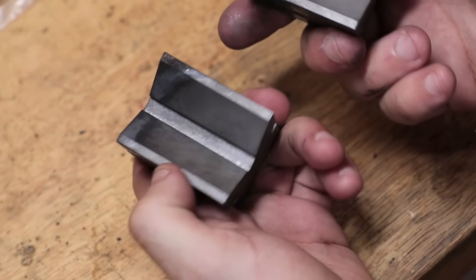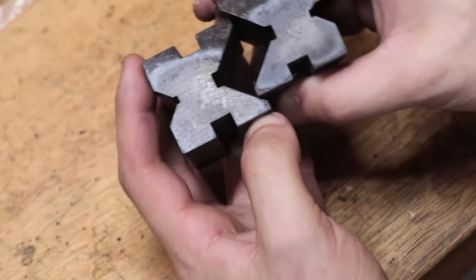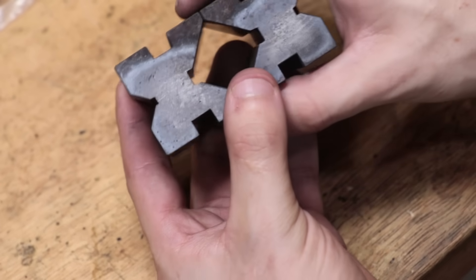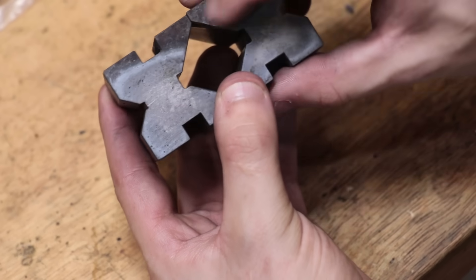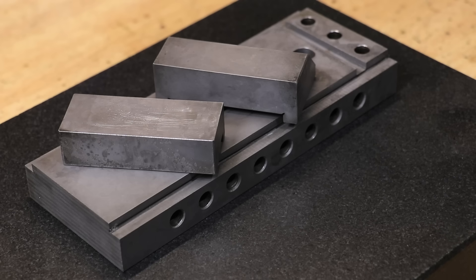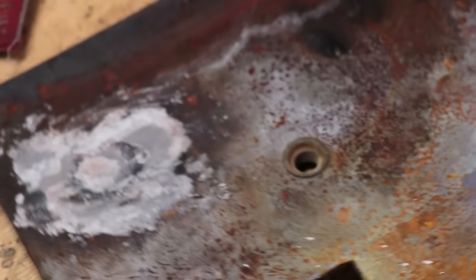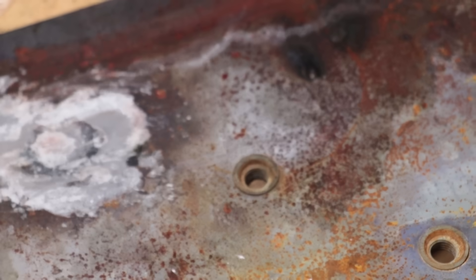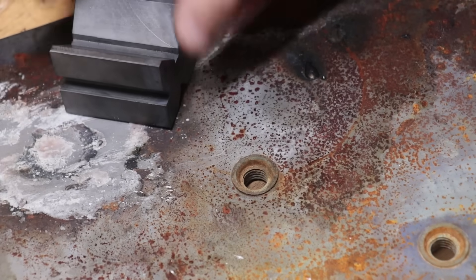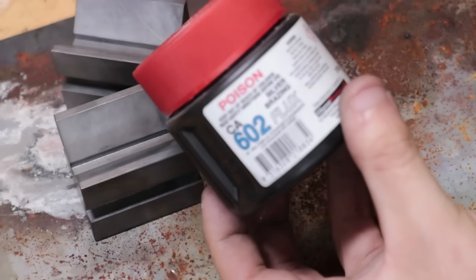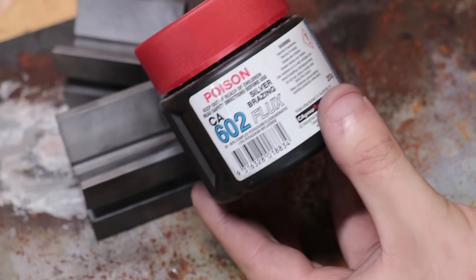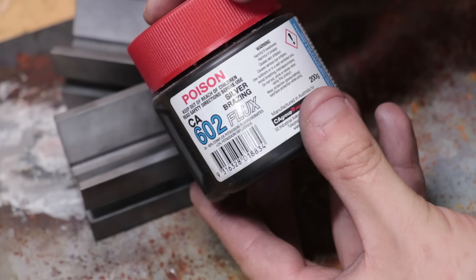Now one change that I am making to the method is to use a flux to protect the steel from oxidizing as I heat it up. The oxide really did a number on my vice, so the best thing I can do is try and avoid it here. I'm sure that a lot of you will be familiar with the boric acid method that was made popular by Chris at Clickspring. I don't have any boric acid on hand, but I did a quick test with some brazing flux and it seemed to work just fine.